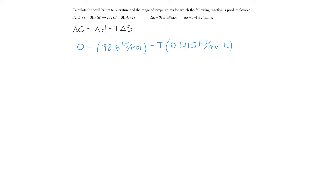I'm going to rearrange, move the 98.8 to the other side, and that will equal negative T times 0.1415, of course the negatives cancel. And solving for T gives 698 Kelvin. This is the equilibrium temperature.